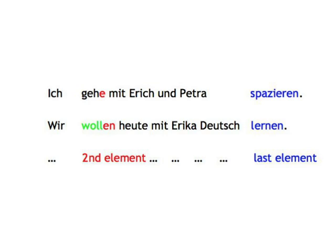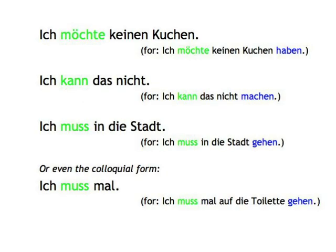In rare circumstances the infinitive of the main verb can be omitted. That happens if a verb of motion like gehen, or common verbs like machen, tun, or haben are clearly understood from the context. For example: Ich möchte keinen Kuchen (instead of Ich möchte keinen Kuchen haben), Ich kann das nicht (instead of Ich kann das nicht machen), Ich muss in die Stadt (instead of Ich muss in die Stadt gehen), or even the colloquial Ich muss mal, meaning Ich muss mal auf die Toilette gehen.